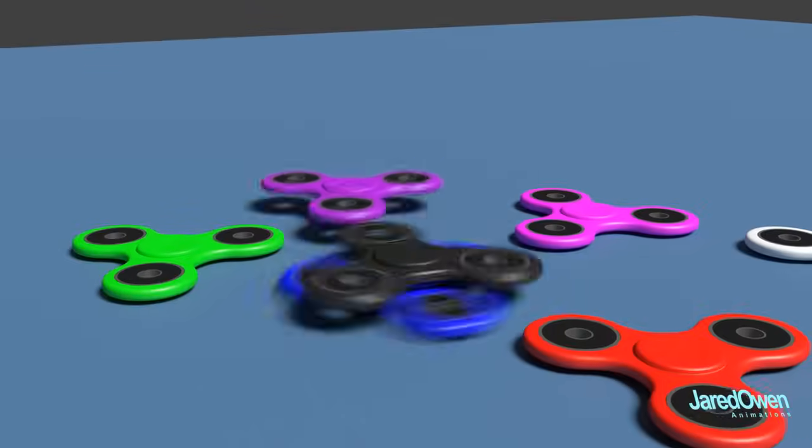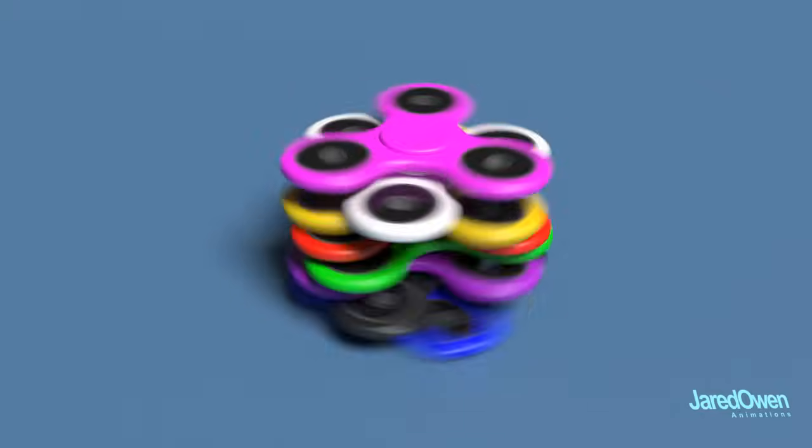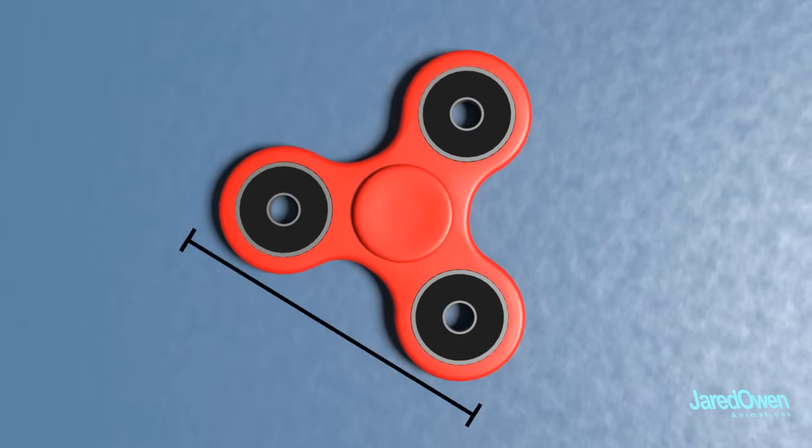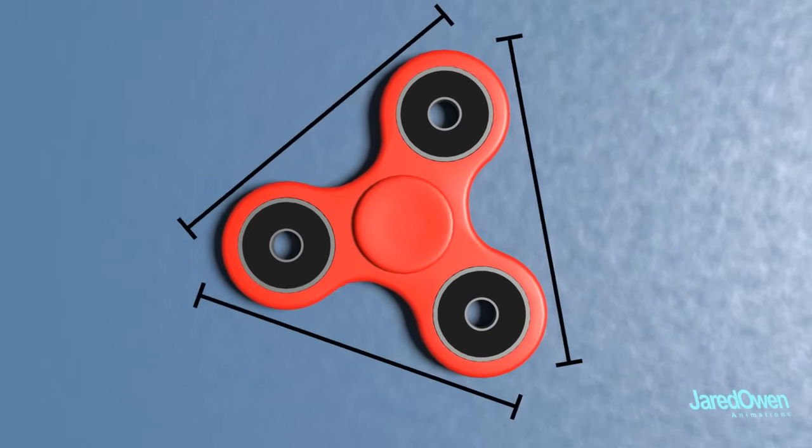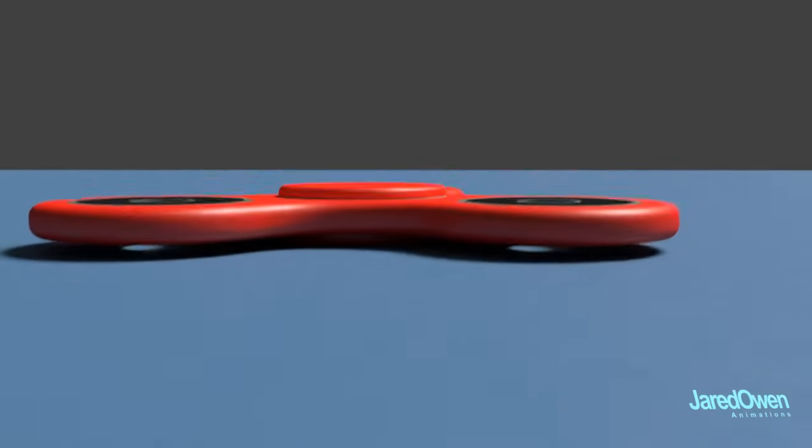You can even stack them on top of each other while they are spinning. A good fidget spinner will continue to spin for a while on its own. Fidget spinners are about three inches wide and only a quarter inch thick. Let's take one apart and see what it looks like.